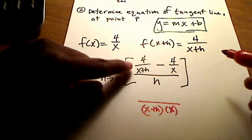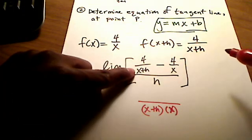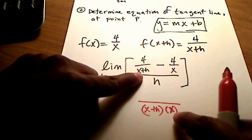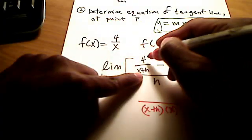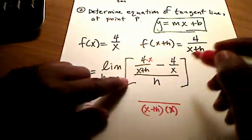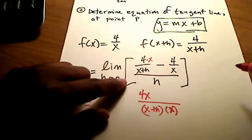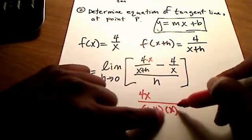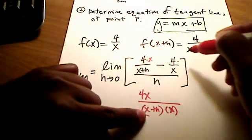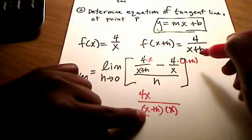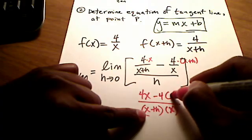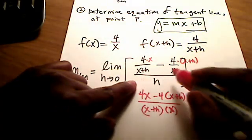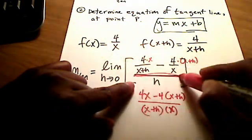Since this first denominator doesn't have an x, all it has is an x plus h, so it's missing the x term, then multiply the top by x as well. So my new numerator is 4x. This denominator already had just the x, but it was missing the x plus h. So I'm going to multiply its numerator by x plus h. And so I have 4 times x plus h. This is all being divided by h.